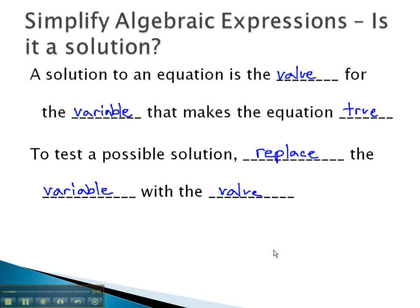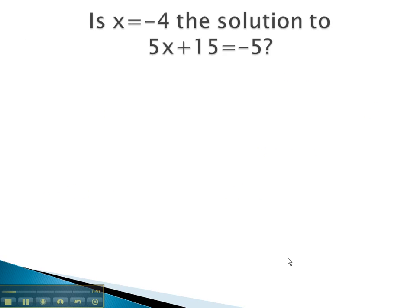Let me show you an example. Here we want to know if x = -4 is the solution to the equation 5x + 15 = -5. To test this, we replace x with the value it represents. So we have 5(-4) + 15 - always use parentheses to show it's still multiplied - and we want to know, does it really equal -5?